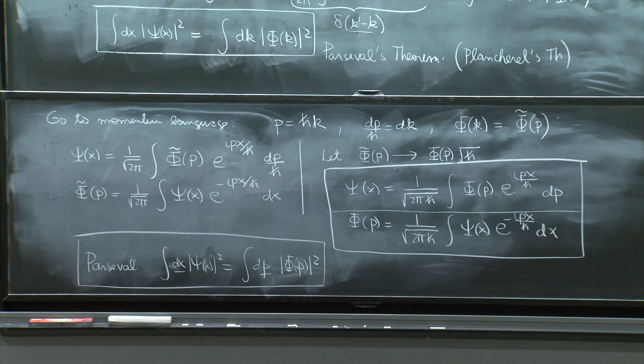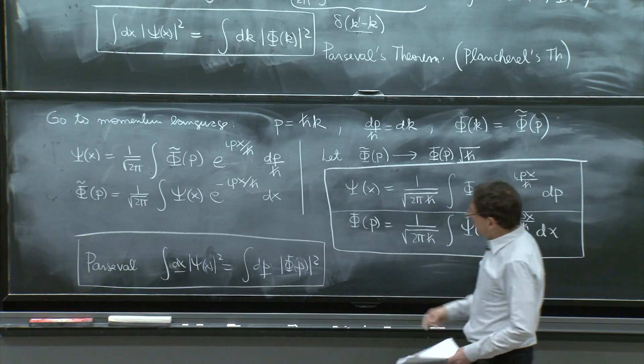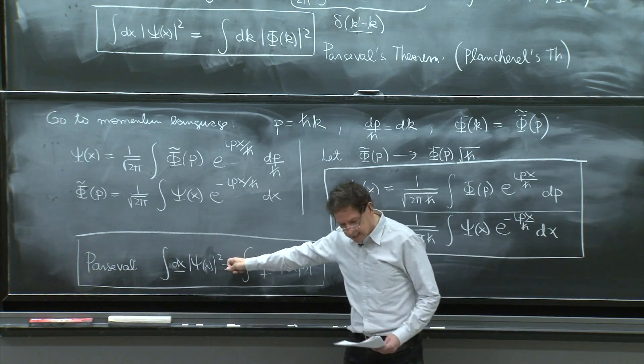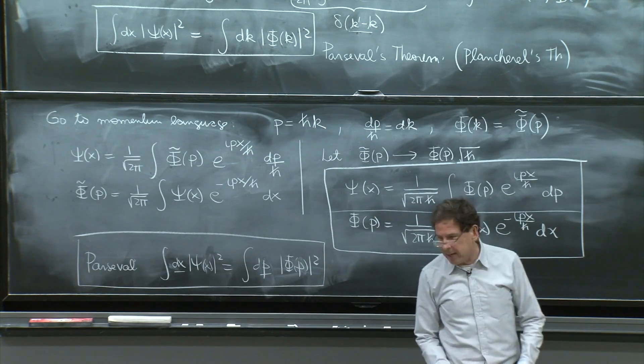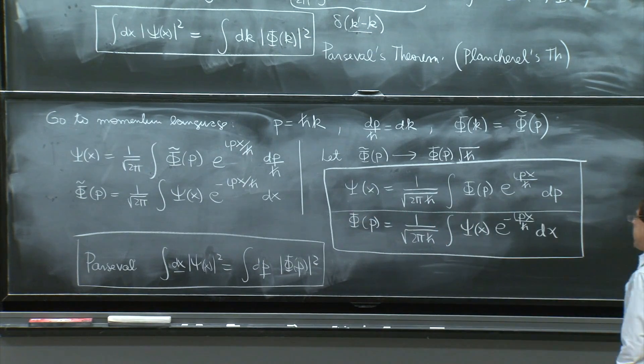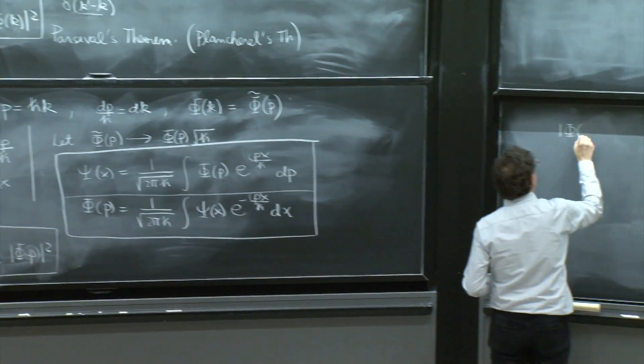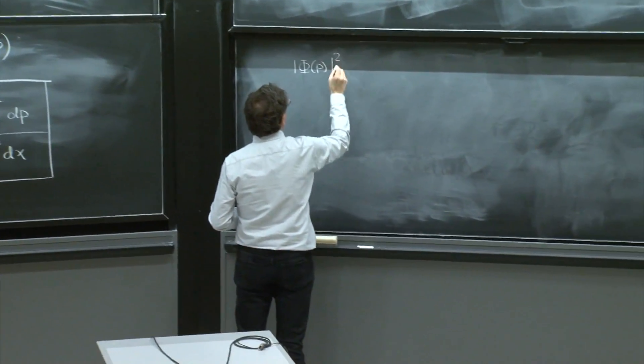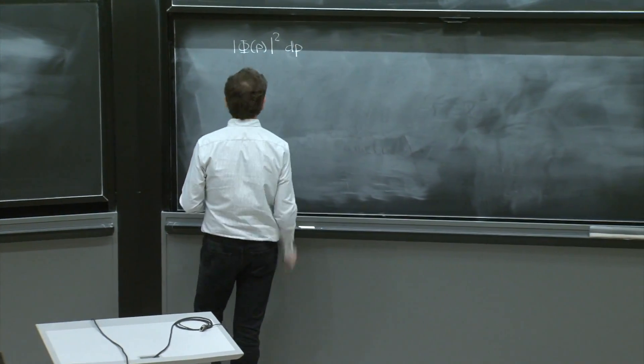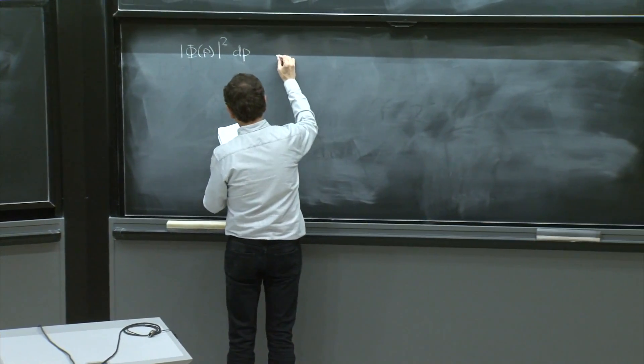So we'll do the natural thing that we did with x. We'll interpret phi of p squared dp as the probability,